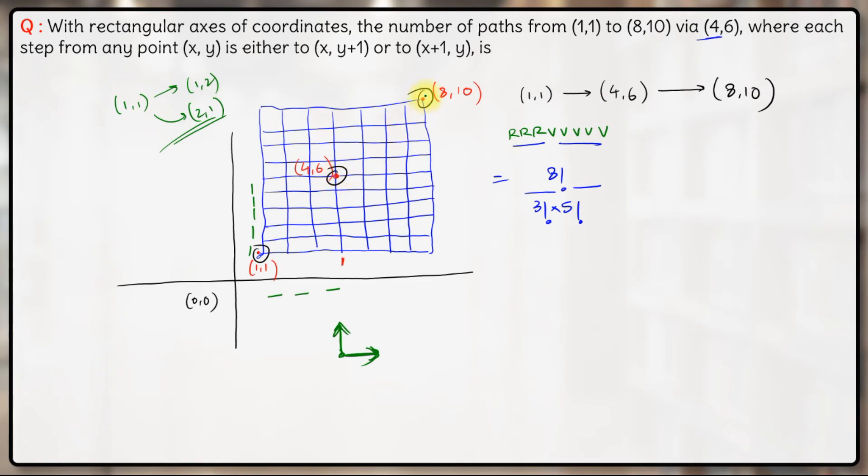Now to go from (4,6) to (8,10), let us see how many steps do we need to take. 1, 2, 3, 4 right steps and 1, 2, 3, 4 vertical steps. So again we have total 8 objects here and out of these 8 objects to be arranged, 4 are alike and the other 4 are alike.